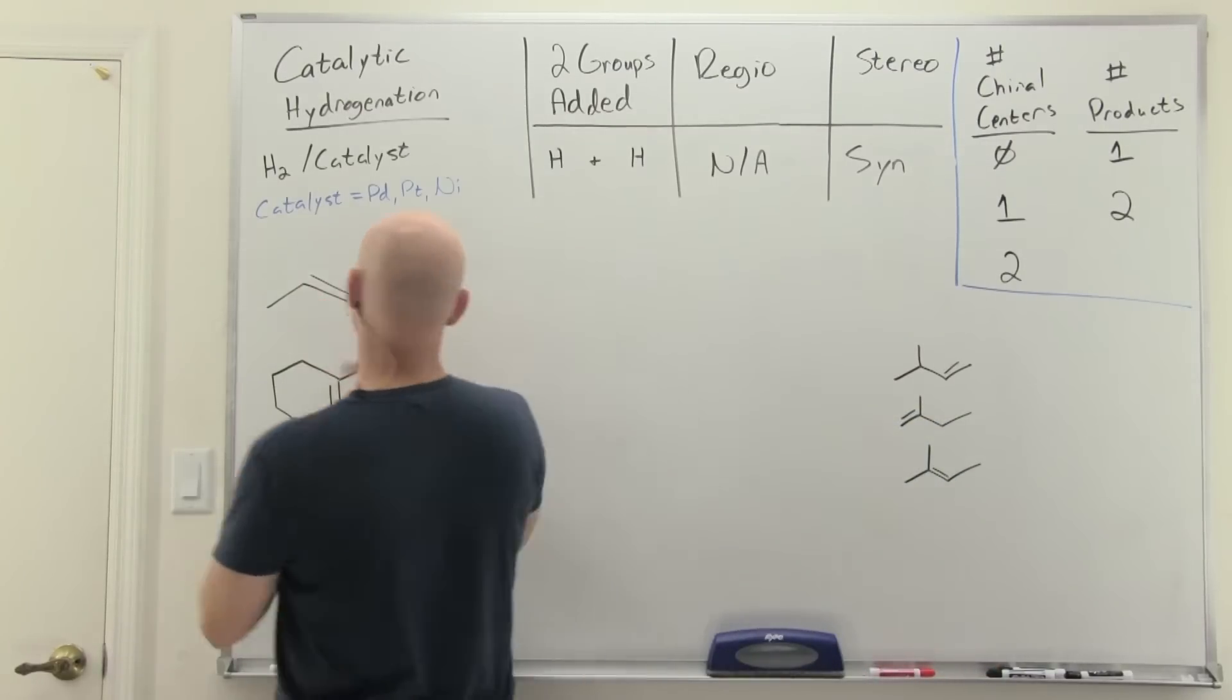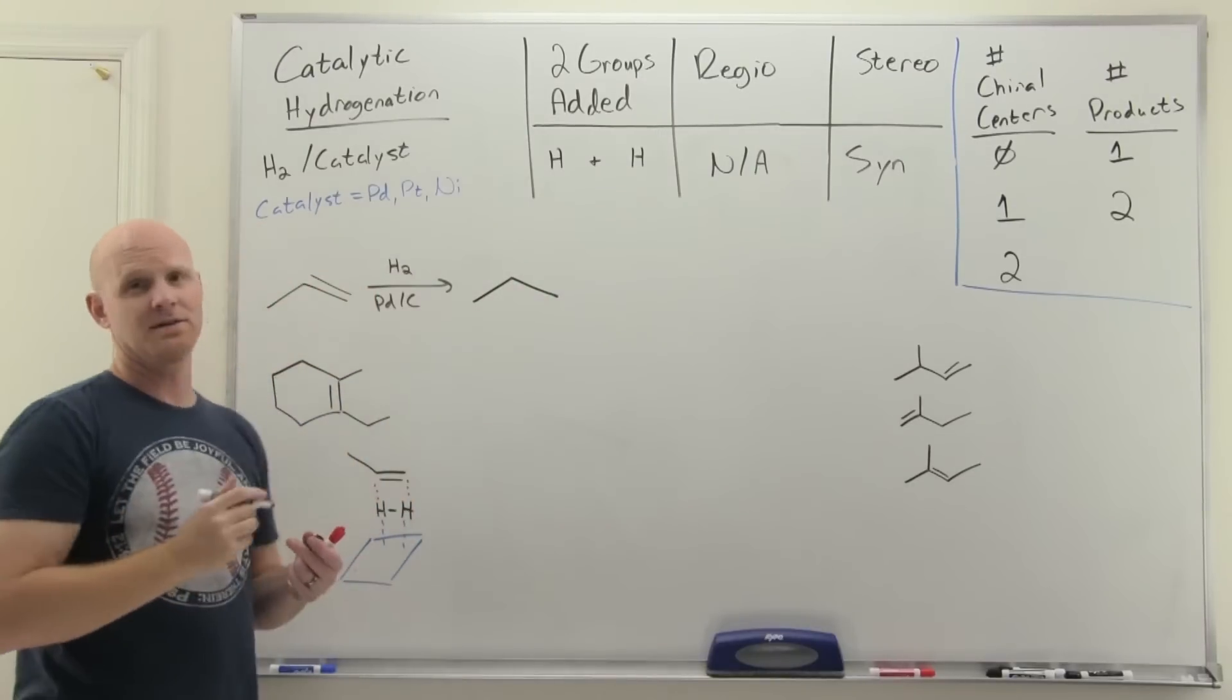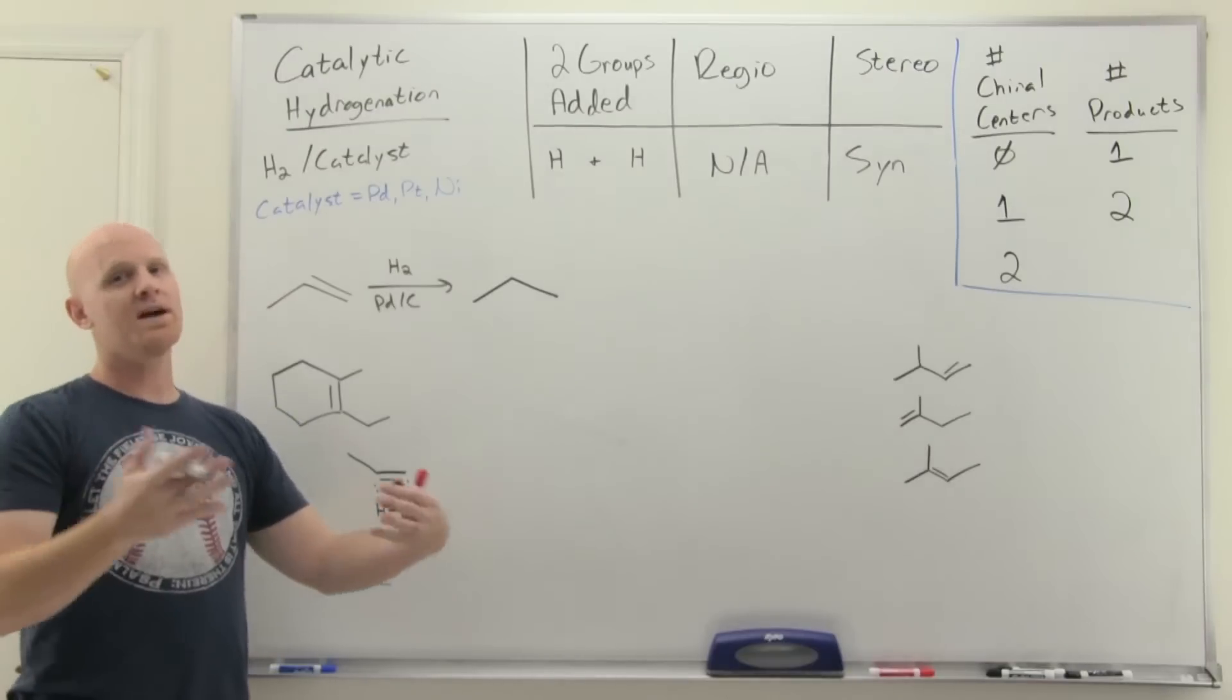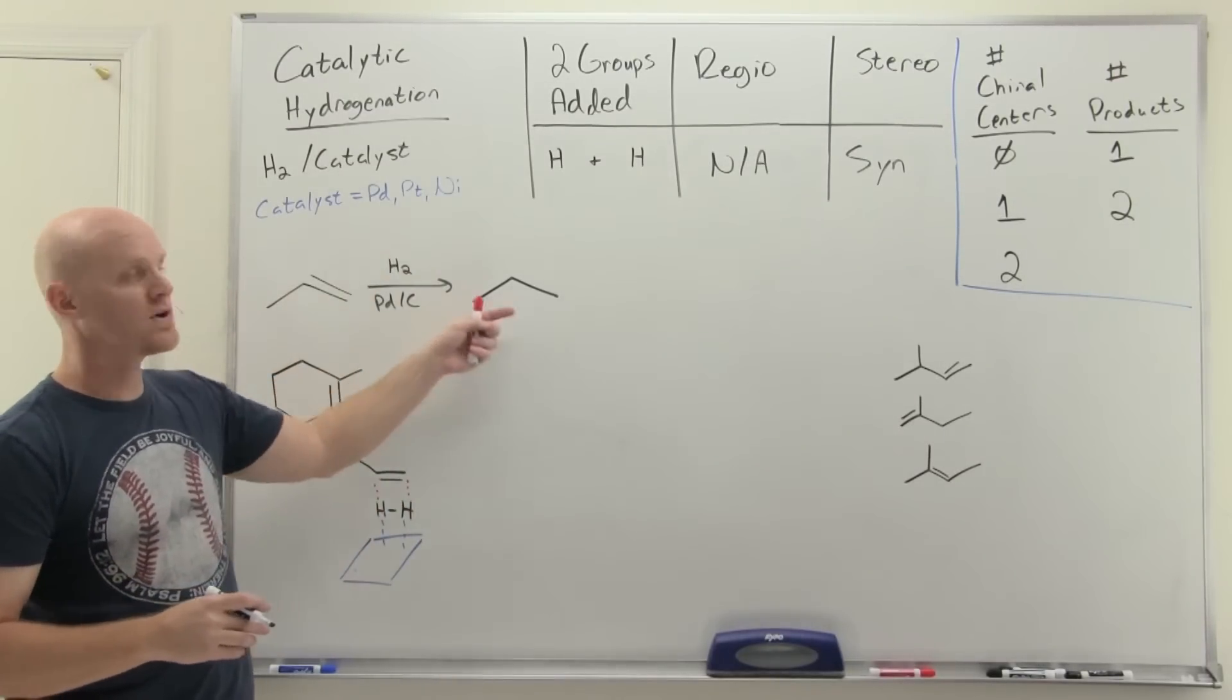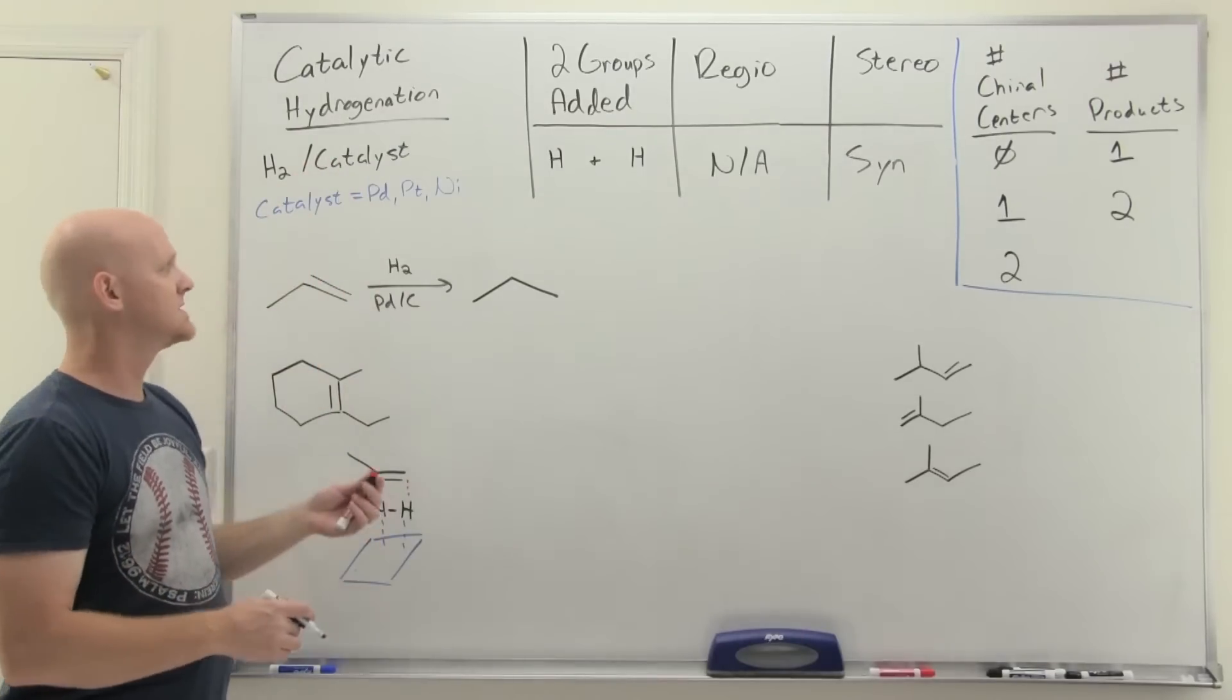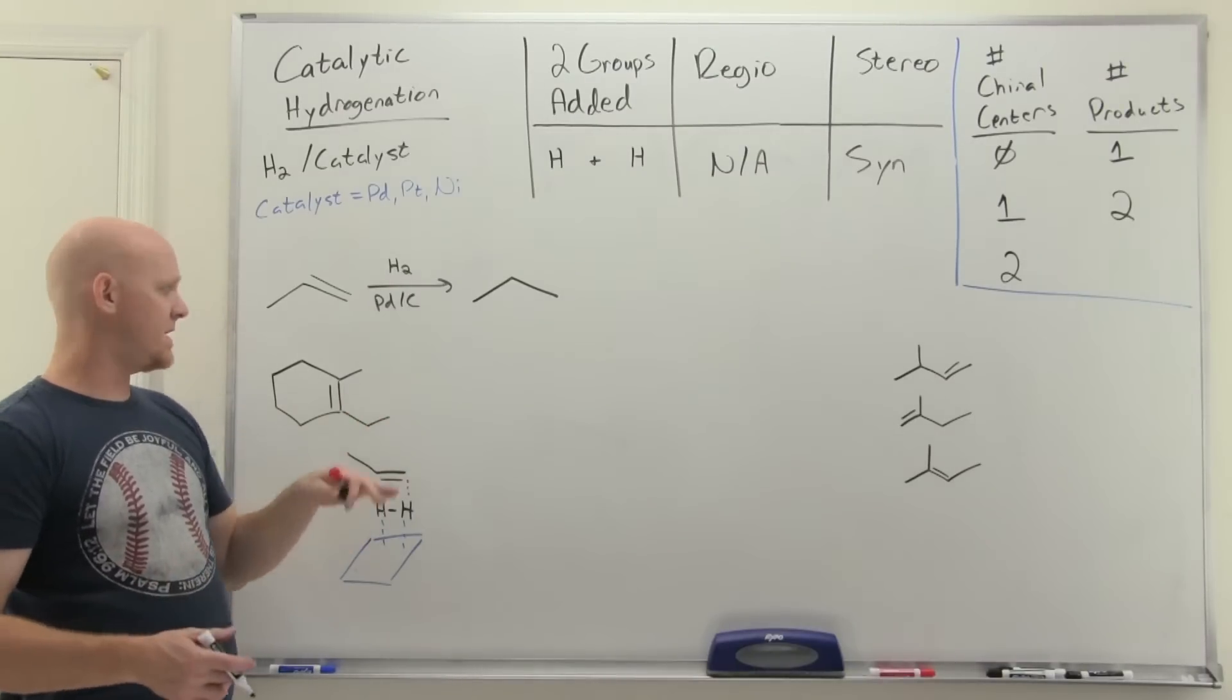In this first one, if we add an H to both sides, we simply turn an alkene into an alkane. A lot of students just think it takes the double bond away. Well, it adds two H's. We don't draw them in, but they both got added there. This is technically also called a reduction. Some people even call the reaction catalytic reduction.